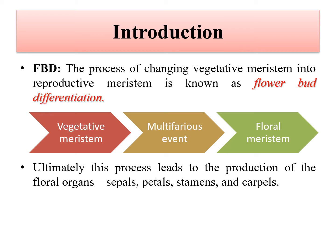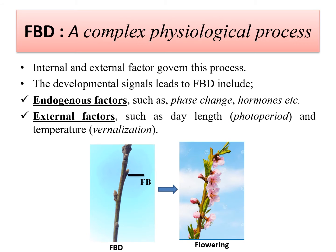This transition involves a number of events like biochemical changes, changes in pattern of morphogenesis, and changes in cell differentiation. Ultimately, this whole process leads to the production of different floral organs — sepals, petals, stamens, and carpels. This process of flower bud differentiation is a complex physiological process.